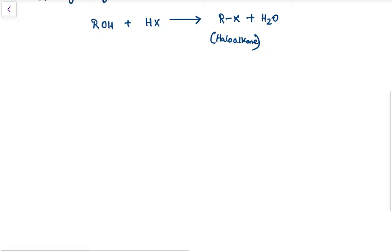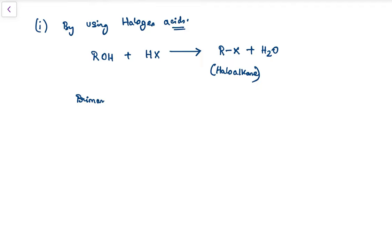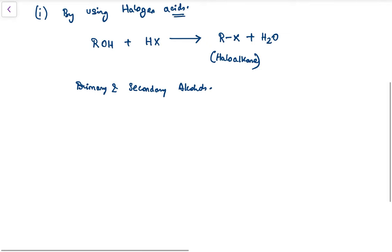In the case of primary and secondary alcohols, the process is done by using hydrochloric acid gas, which is made to pass through alcohol in the presence of anhydrous zinc chloride. This reaction has a name; it is known as the Gross process.